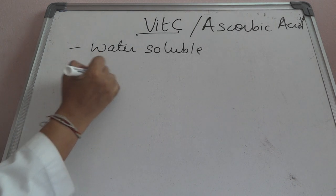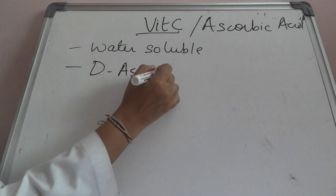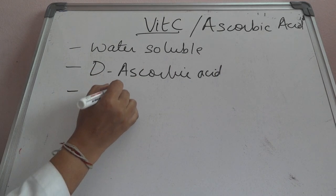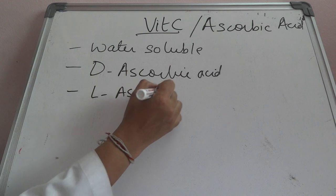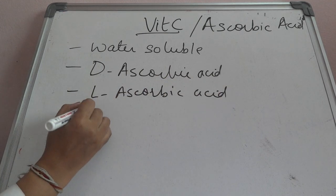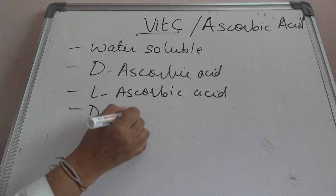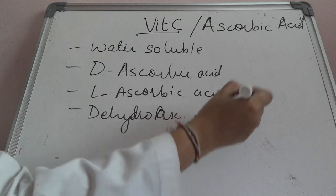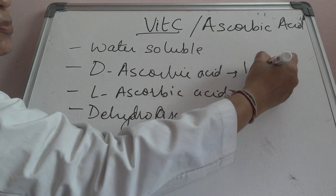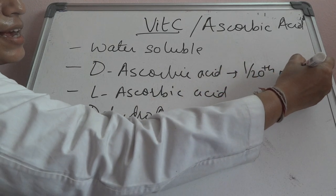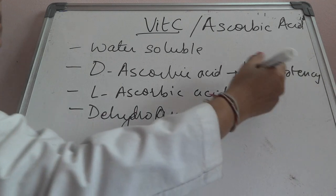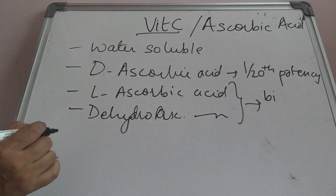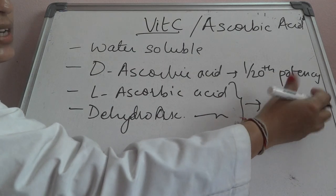Vitamin C is present in three forms: D-ascorbic acid, L-ascorbic acid, and dehydroascorbic acid. D-ascorbic acid has only one-twentieth the potency of L-ascorbic acid, whereas L-ascorbic acid and dehydroascorbic acid are both biologically active and have the same potency.